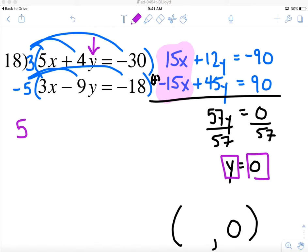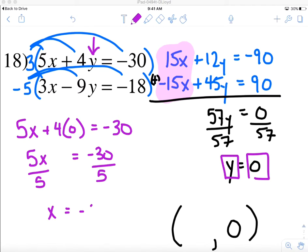So here's what I would have: 5x plus 4 zeros, because we put the y in there, equals negative 30. Now this part, the 4 times 0, doesn't really matter so that goes away. I divide both sides by 5 and I get x is negative 6, which means I now have my answer.